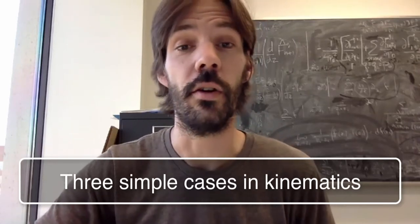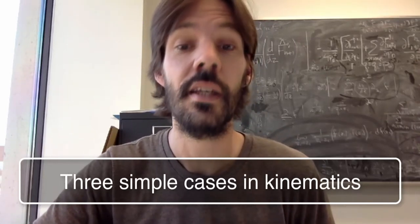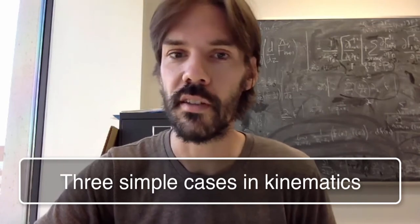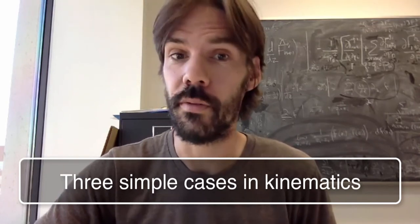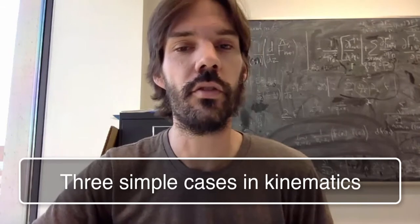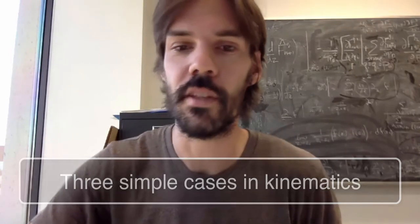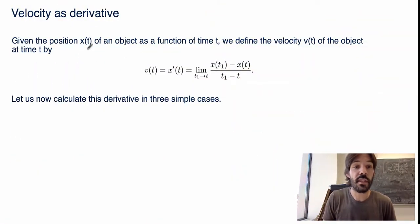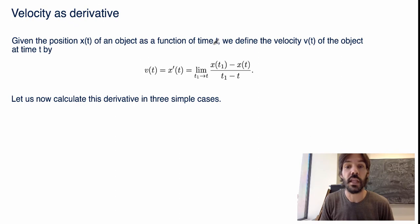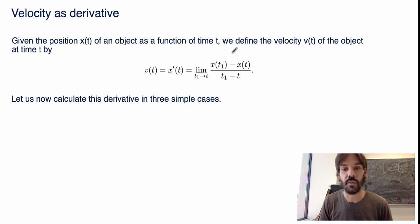What we've seen in the previous video is that the instantaneous velocity can be defined in terms of a limiting process, and we call that derivative mathematically. So what we'll do now is study three examples of very simple motion where we can actually take the derivative very explicitly. If I give you the position x of t of an object as a function of t, then we define its velocity as being the limit of the average velocity where I send the two times t1 and t to be very close to each other. So let's calculate that in three very simple cases.